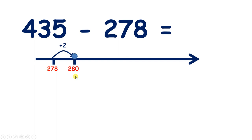Now, how many do we need to get to 300? We need 20 more to get to 300, and now we can add 100 to reach 400, and we need to get to 435. So now let's add 30 and 5 to make 435.